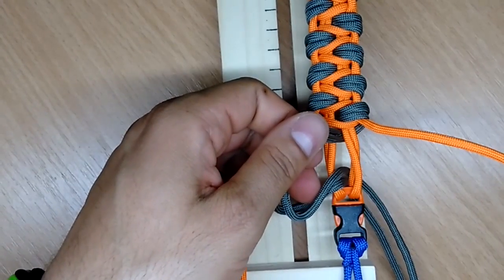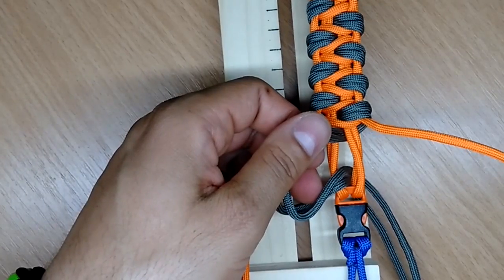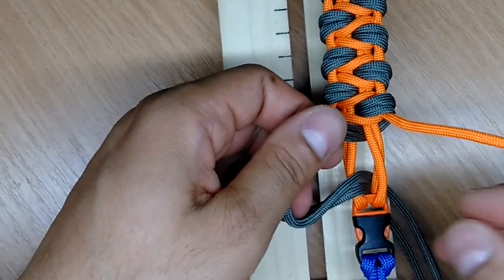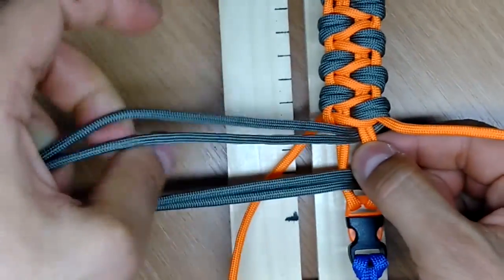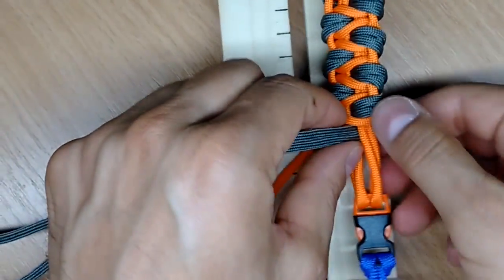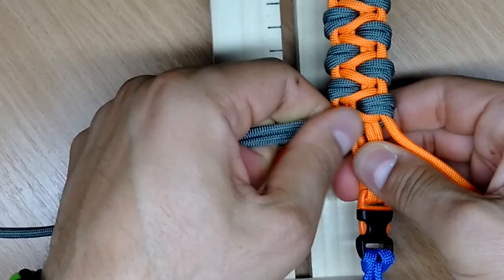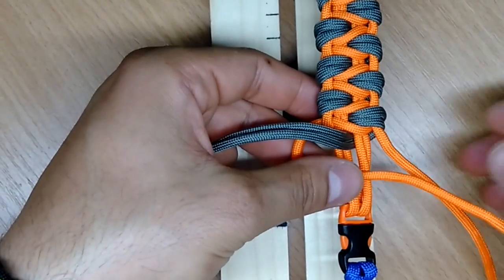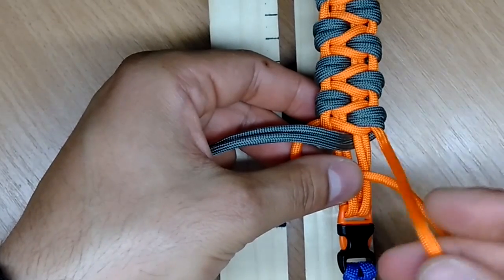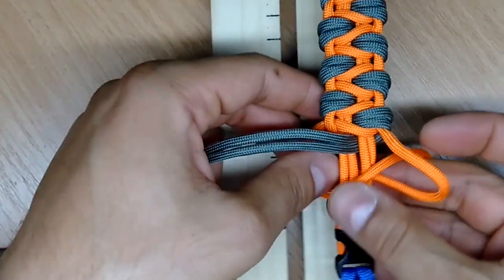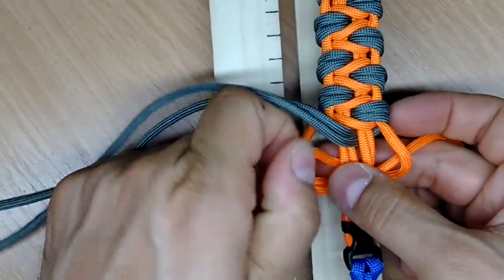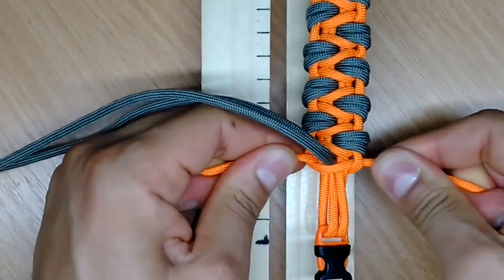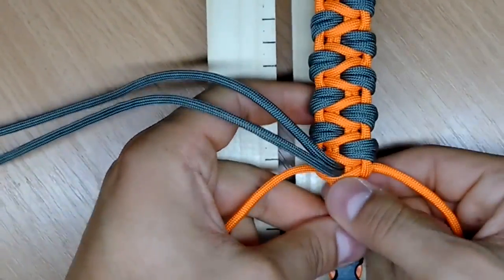I'm gonna zoom a bit more so you can see better. Now, left one gonna go on top and the right one on top of the left, under the bracelet, through the left loop as you can see and squeeze. Pull it tight.